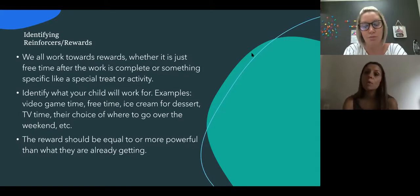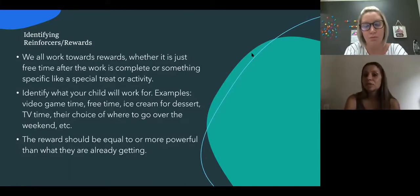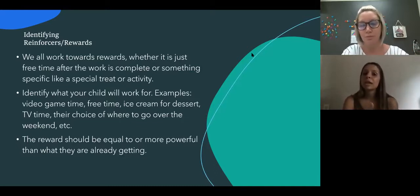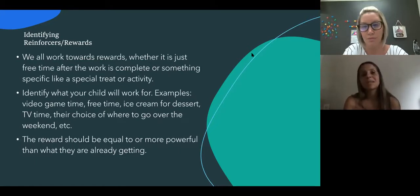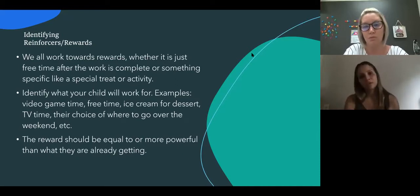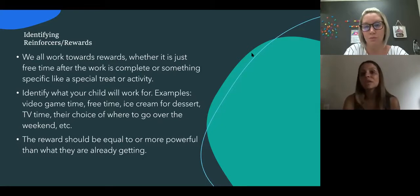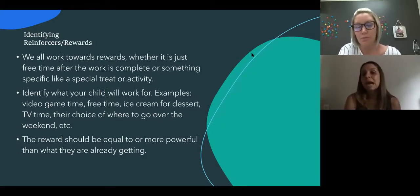Once you identify what motivates your kids and what they're willing to work for, make sure that it is isolated out — they can only have those activities once they have completed whatever you've asked them to do. Looking back at visual schedules, we want to make sure they're checking all those things off before they can have access to preferred activities. We also really want to make sure the reward is equal to or more powerful than what they are already getting. For example, if your child is not engaged in online instruction because they're watching YouTube on the computer, the reward must be equal to or greater than YouTube. If you offer a walk while they're already getting YouTube, they're not going to be willing to do the work because what you're offering is not valuable enough.